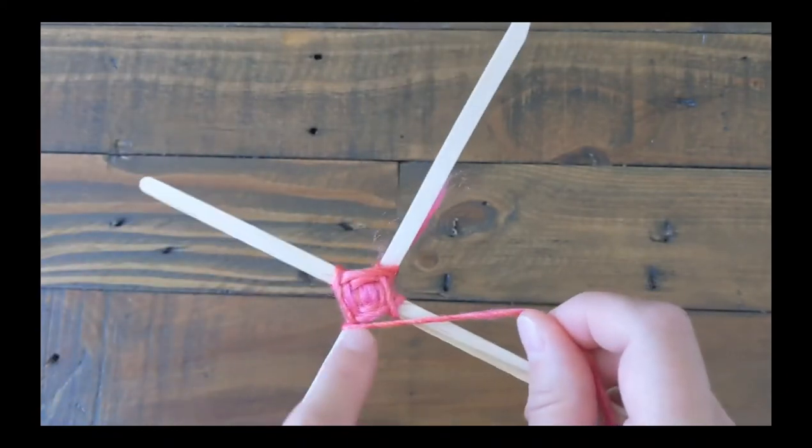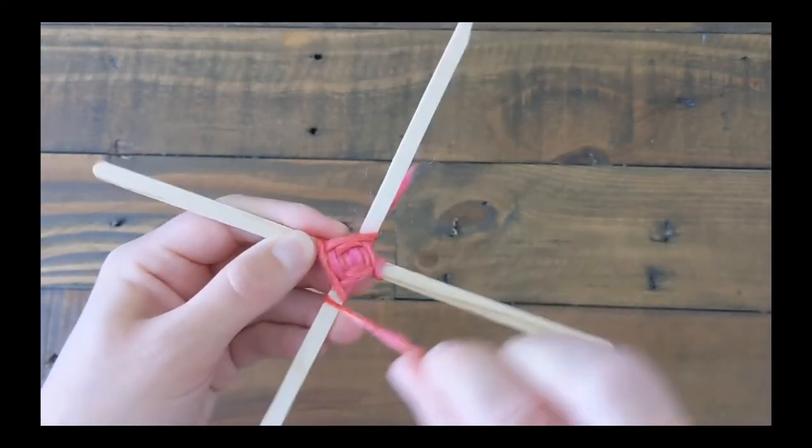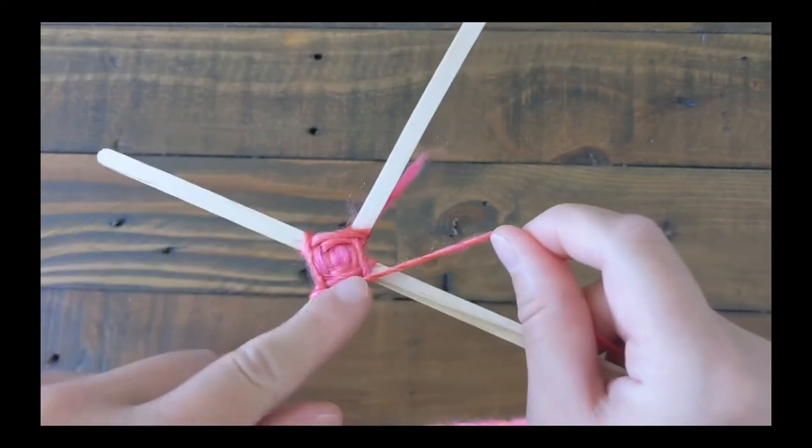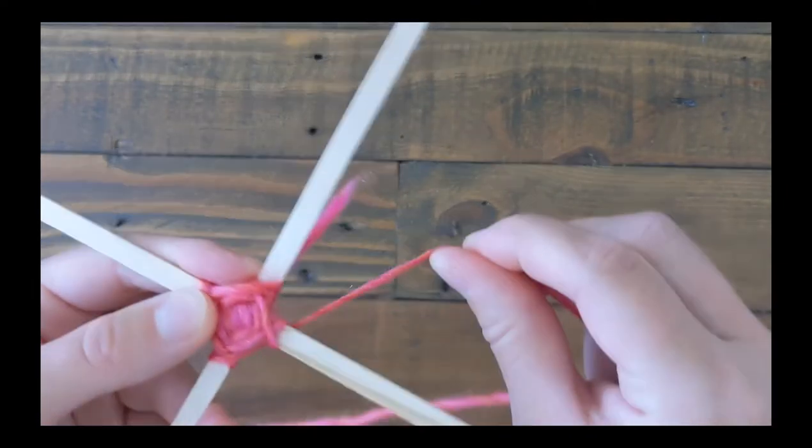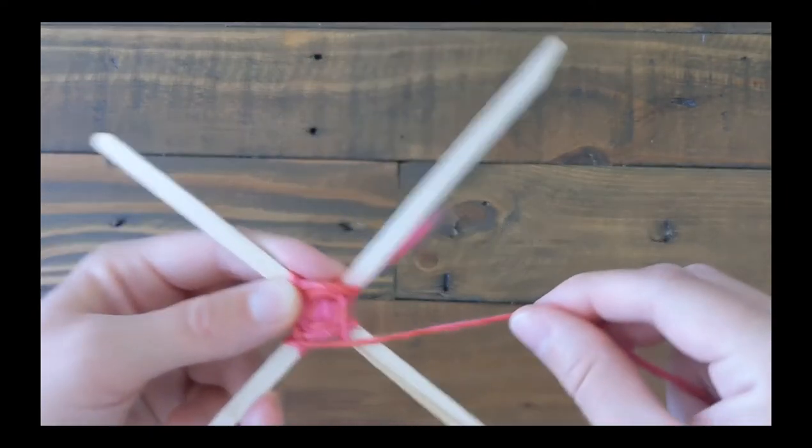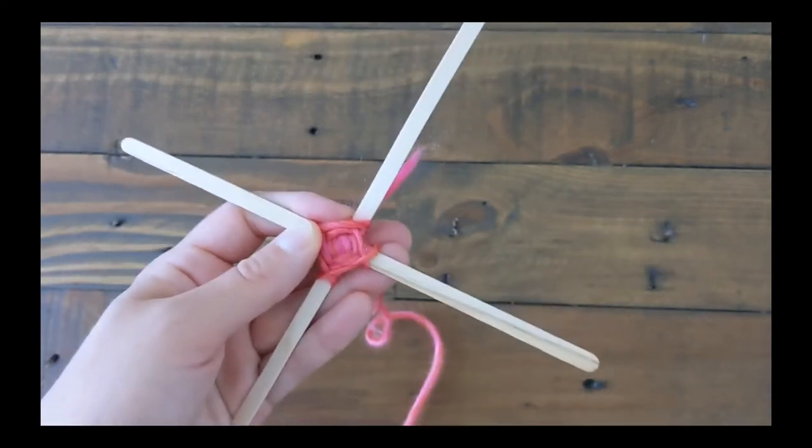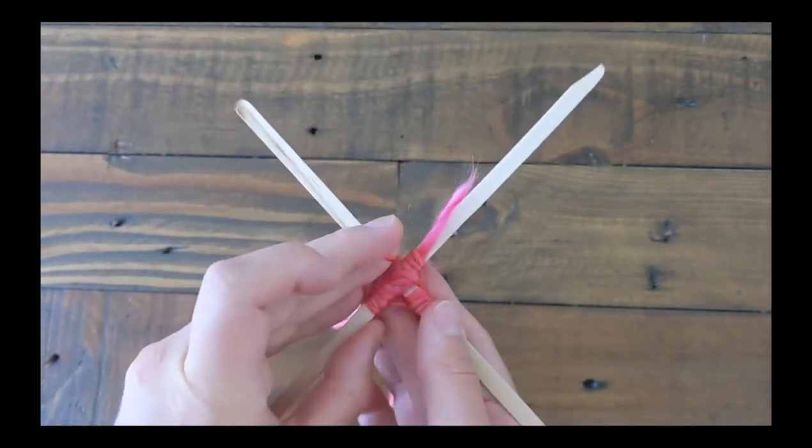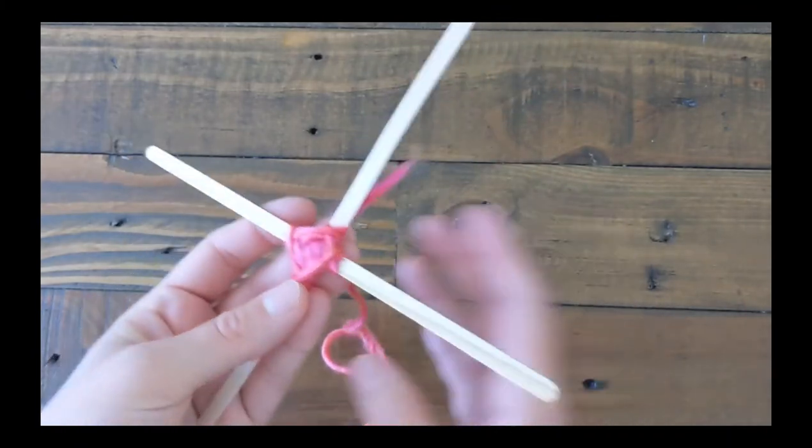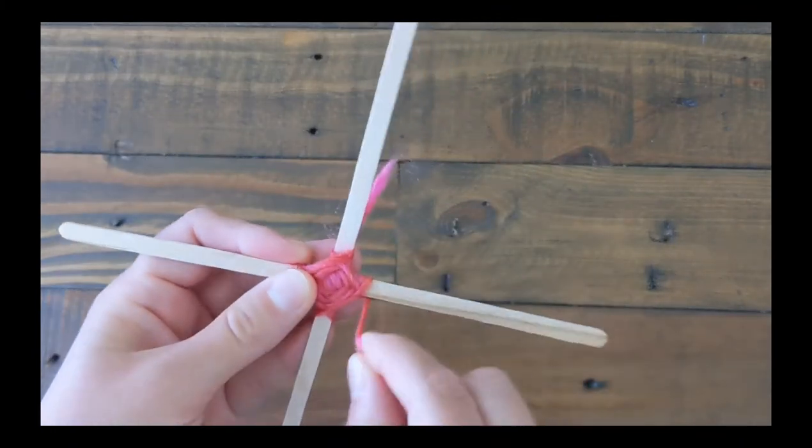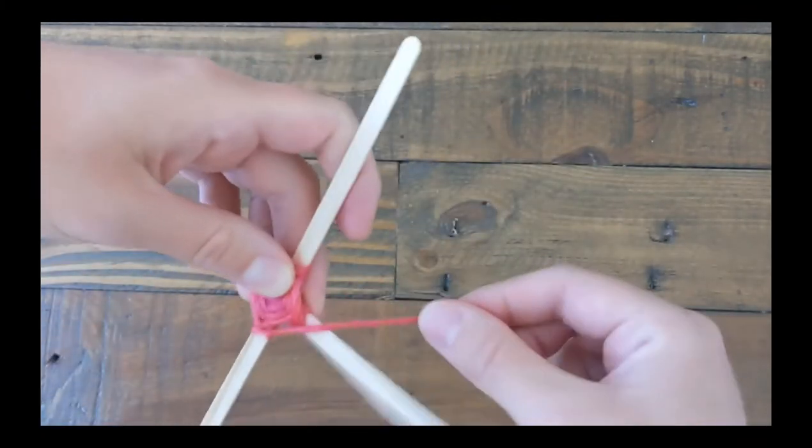And also when I go over, I try as best I can to get the yarn to line up directly with where the last bit of yarn was on that stick. So around once and over. Another thing to note is that when I go over, I'm always going over on the top. I never go over on the bottom.